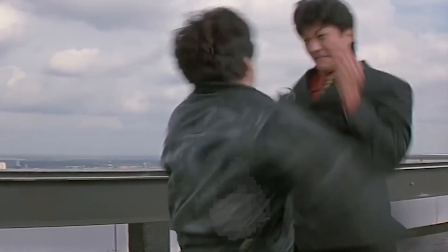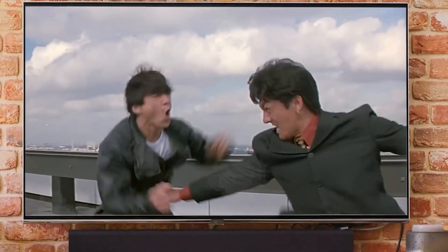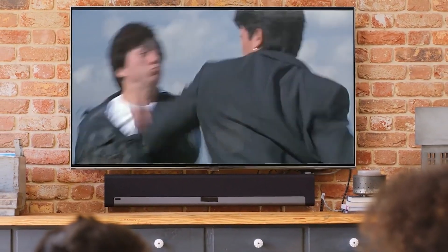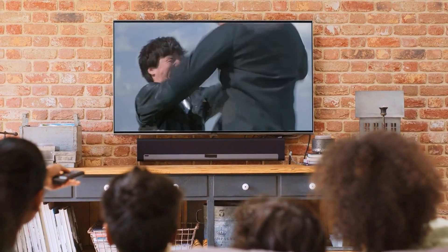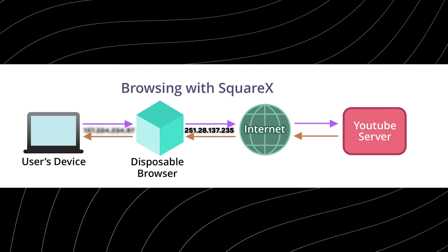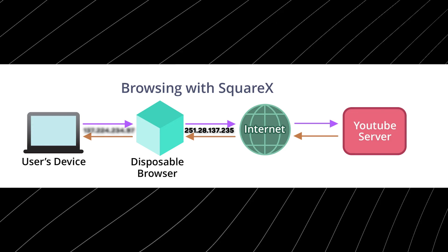Each time you open a website using SquareX, the website is actually opened on a computer in the cloud and you get to see its content as if you're looking at a video. This way you can avoid all the danger that would accompany the live action while enjoying the good content. SquareX will simply hide your IP since you're opening whatever you want from their cloud environment instead of your own computer — the world sees only the IP of the remote container you're using inside SquareX.